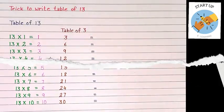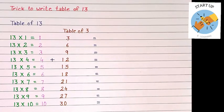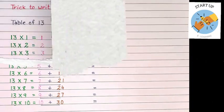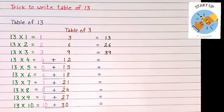Now we are going to take the first number and the last number together. Like 1, 3 is 13. 2, 6 is 26. 3, 9 is 39.